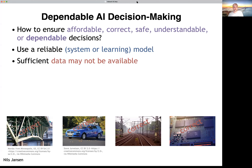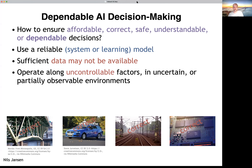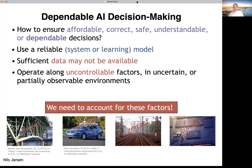However, a very obvious problem is that to create such models, we may not have enough data, or it may not be clean enough, or maybe too large. On top of that, these systems operate alongside uncontrollable factors, for instance, humans. So there's uncertainty and partial observability about the system and its environment. These are factors we need to account for. And we didn't even talk about scalability, because real-life systems will induce models that are extremely large.